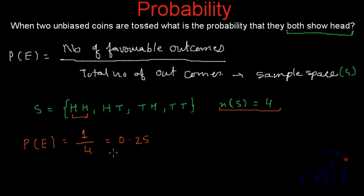So what did we do? First we found the sample space — the set of all possible outcomes. Then we found how many favorable outcomes we have, and calculated the probability as the number of favorable outcomes divided by the number of all possible outcomes.